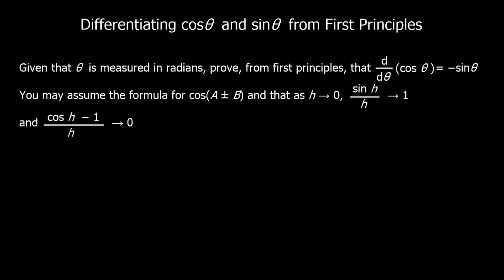We can assume the formula for cos(a ± b), and we can assume that as h approaches 0, sine h over h goes to 1, and (cos h − 1) over h goes to 0.